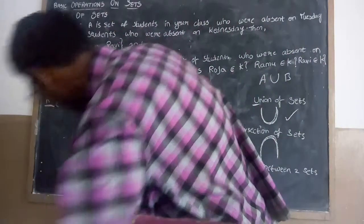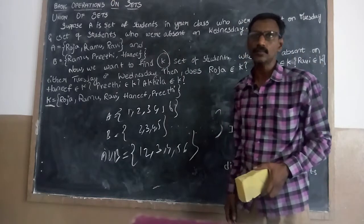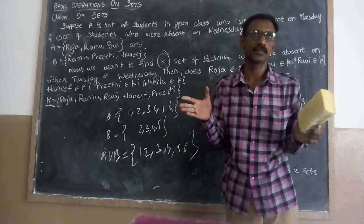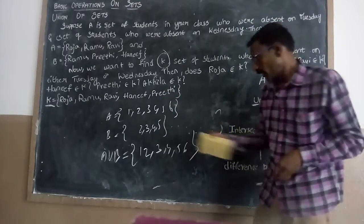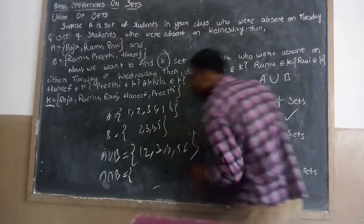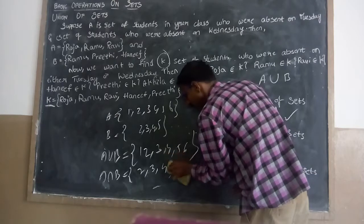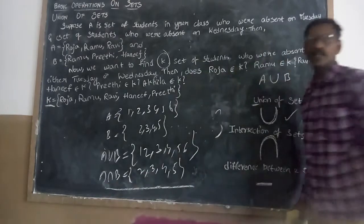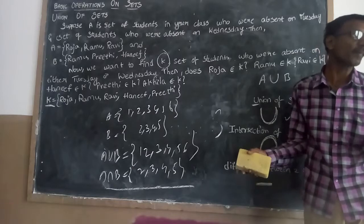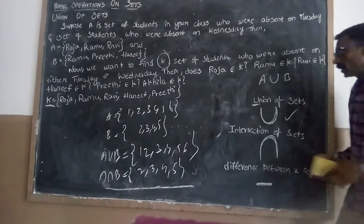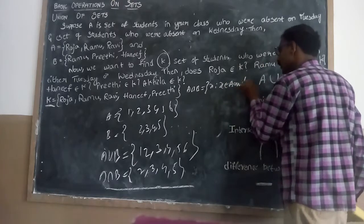Now we are going to discuss about intersection. In our student example, Ramu is absent on both Tuesday and Wednesday — he is absent two days. Those elements that are in both sets form the intersection. A intersection B equals those elements common to both — that is 2, 3, 4, 5. A intersection B means the elements common between A and B. In set-builder form, A intersection B equals X such that X belongs to A and X belongs to B.